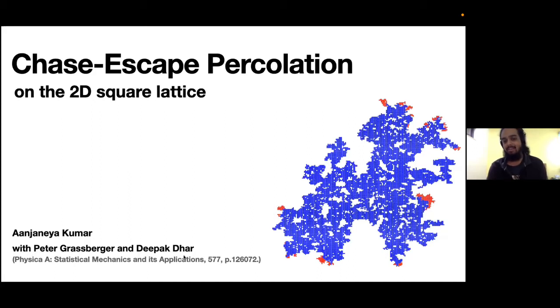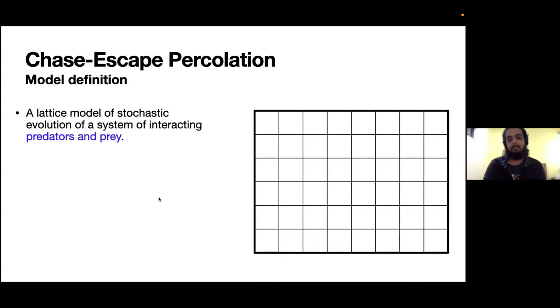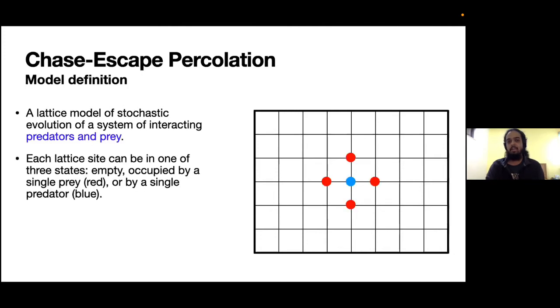Let me jump right into the definition. The Chase-Escape is a model that tries to capture some features of interacting predators and prey. In this model, each lattice site can either be empty, occupied by a predator which I denote by a blue point, or occupied by a single prey which I denote by this red point.